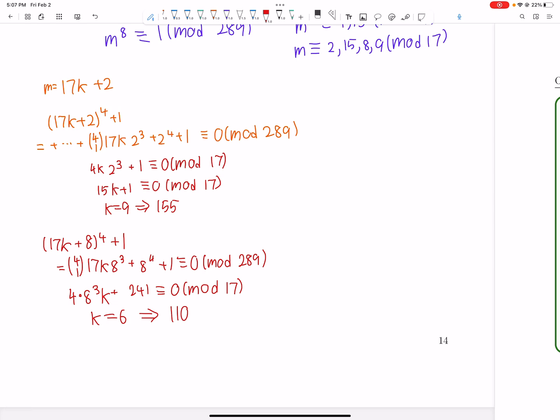So now, same procedure again. I'm not going to rewrite it. 4 times 9 cubed k plus 9 to the 4 plus 1. And then we also have 4 times 15 cubed k plus 15 to the 4 plus 1. And it's kind of a little bit tedious here. So I don't really want to do it right now. But you can do it for practice. It will be a good exercise.